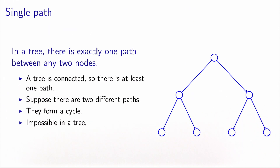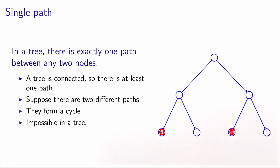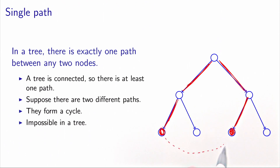The next property states that in a tree, there is exactly one path between any two nodes. A tree is connected, so we know that between any two nodes there is at least one path — this is the definition of being connected. Now suppose that there is somewhere another path, a different one, that connects the same two nodes. In this case, this would form a cycle in the tree, which is not possible because a tree has no cycle. So there cannot be an additional path. Therefore, the number of paths connecting two nodes is exactly one.